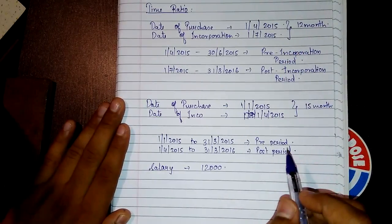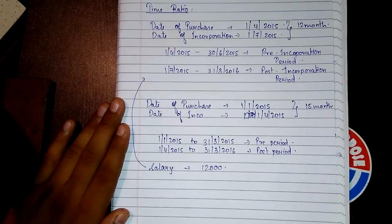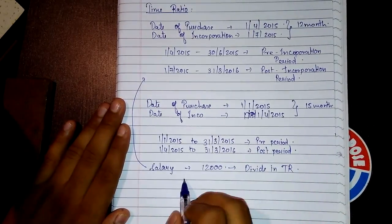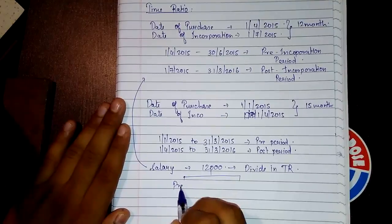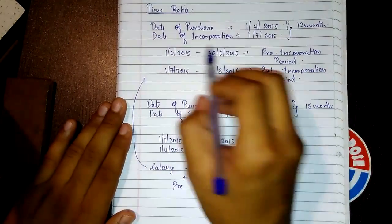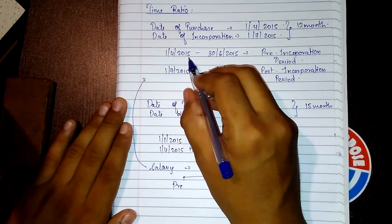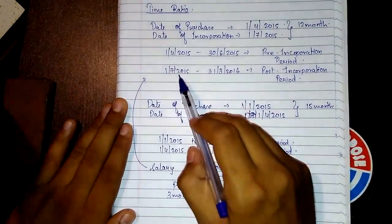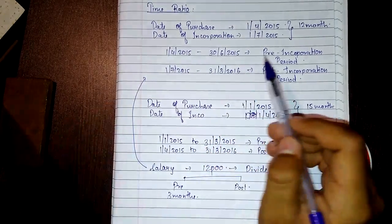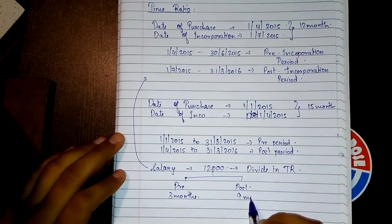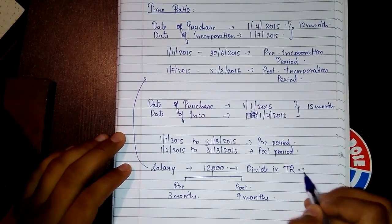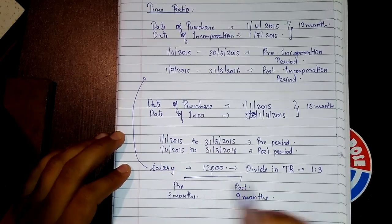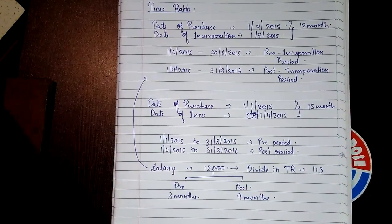We simply need to bifurcate the expenses into these two periods — pre-period and post-period. Take the example of salary of rupees 12,000. Divide it in time ratio. From 1-4-2015 to 30-6-2015 it is 3 months, and from 1-7-2015 to 31-3-2016 it is 9 months. So the time ratio becomes 3 months to 9 months, which simplifies to 1:3.